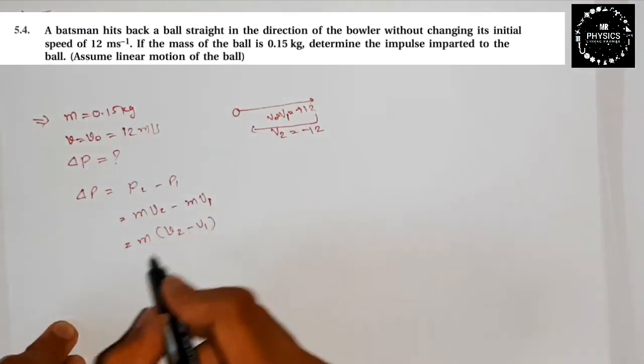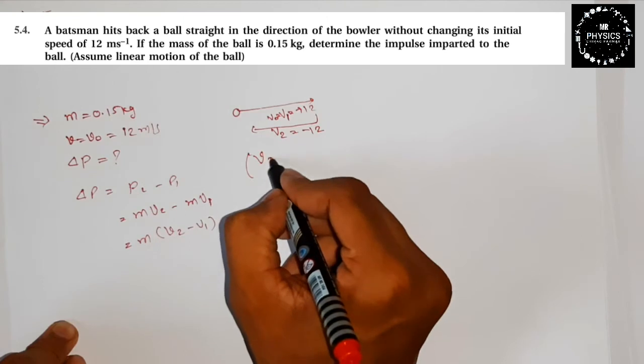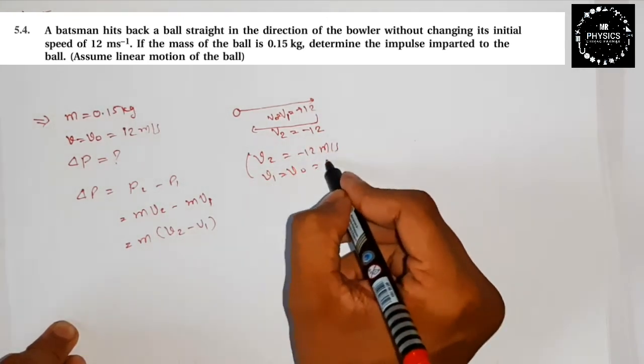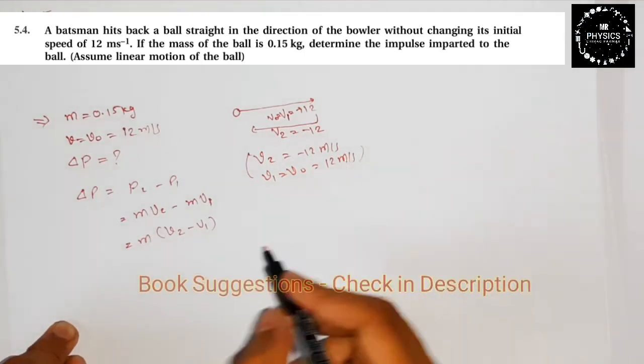So here we can write: v2 equals minus 12 meters per second, where v1 and v0 equal 12 meters per second.